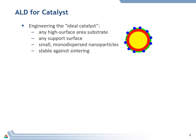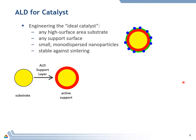Let's start by talking about atomic layer deposition for catalysts. If you wanted to engineer the ideal catalyst, you'd want to start with any high surface area substrate — shown by this yellow circle. You'd then want the ability to put down a support on top of that substrate, signified by this red shell — perhaps a metal oxide co-catalyst. On top of that, you'd want small monodispersed nanoparticles shown by these blue dots, all exactly the same size. And finally, you'd want some means for preventing sintering — stopping these particles from agglomerating as the catalyst undergoes chemical reactions. We can do all of this by atomic layer deposition.